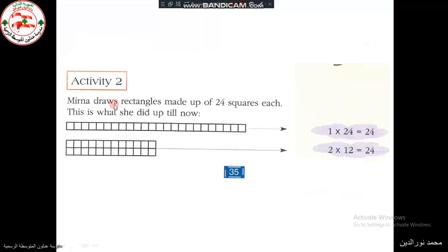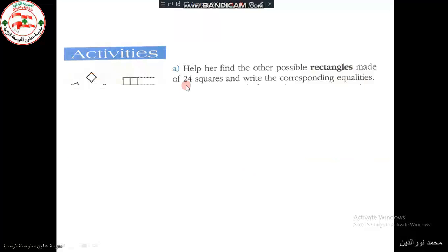Activity 2. Myrna draws rectangles made up of 24 squares each. This is what she did up till now. As we see here, she made 1 row with 24 columns and she wrote this equality, 1 times 24. So we have 1 row and 24 columns. In the second case, we have 2 rows, so 2 times, and we have 12 columns. So 2 times 12 is 24. So he is asking us to help her to find other possible rectangles.